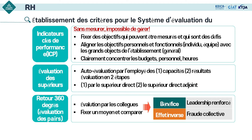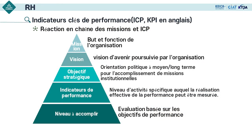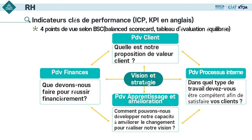L'évaluation des supérieurs et le retour à 360 degrés sont des évaluations par des personnes. La performance et les résultats d'un employé sont évalués à travers l'ICP. Voici comment l'ICP est établi quand les missions de notre fondation sont fixées. La pyramide montre la réaction en chaîne d'émission et ICP. Avant de mettre en place l'ICP, il faut prendre en compte quatre points de vue selon BSC (Balanced Scorecard) — tableau d'évaluation équilibré — avec la vision et la stratégie placées au milieu.